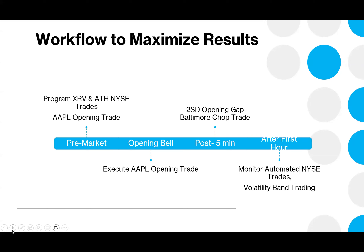During the trading session I want to be more active with things like the Magnificent Seven stocks. I focus a lot on the MAG-7 — in particular Meta, Microsoft, Tesla, and NVIDIA. I'm going to show you how I go through and box those trades up every day so we can make the most out of the opportunities when they appear.